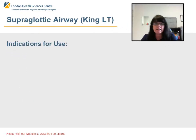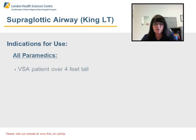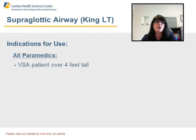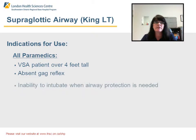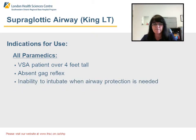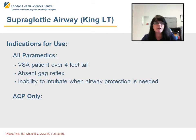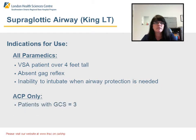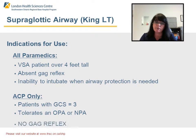Indications for using a KingLT — for all paramedics: VSA patient over 4 feet tall, absent gag reflex, and inability to intubate when airway protection is needed. ACPs can also use a KingLT with a patient with a GCS of 3, who can tolerate an OPA or NPA and have no gag reflex.